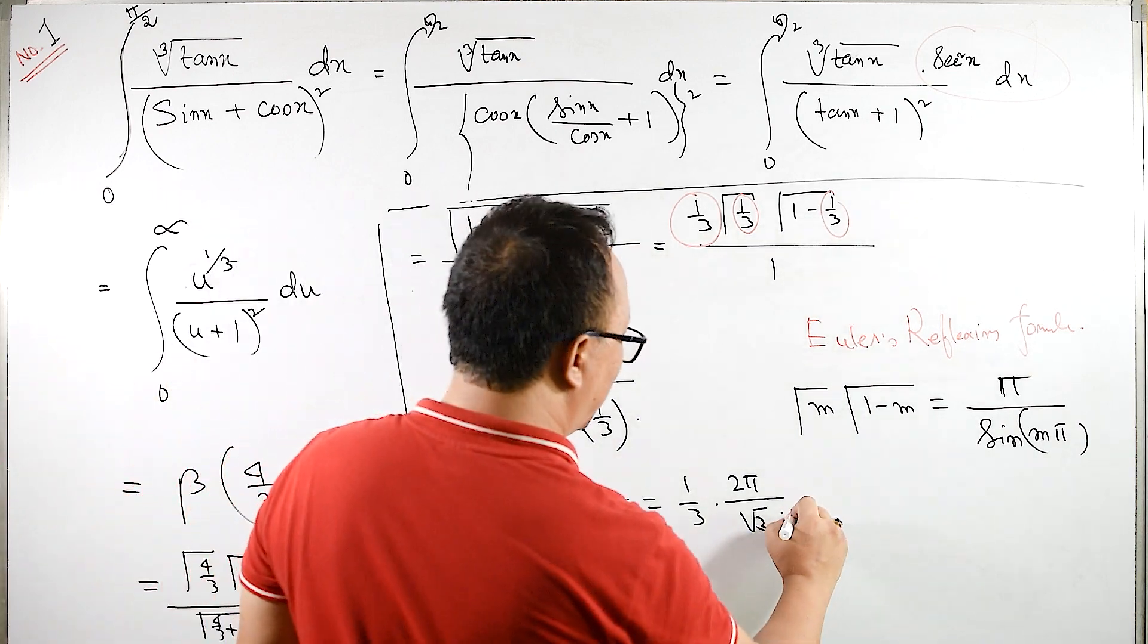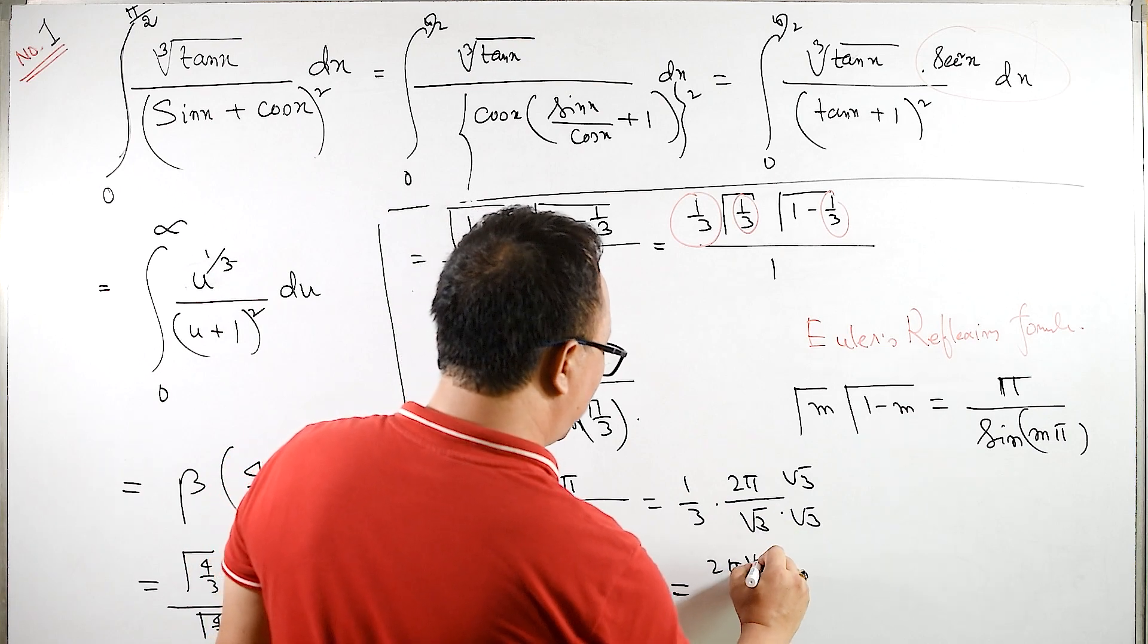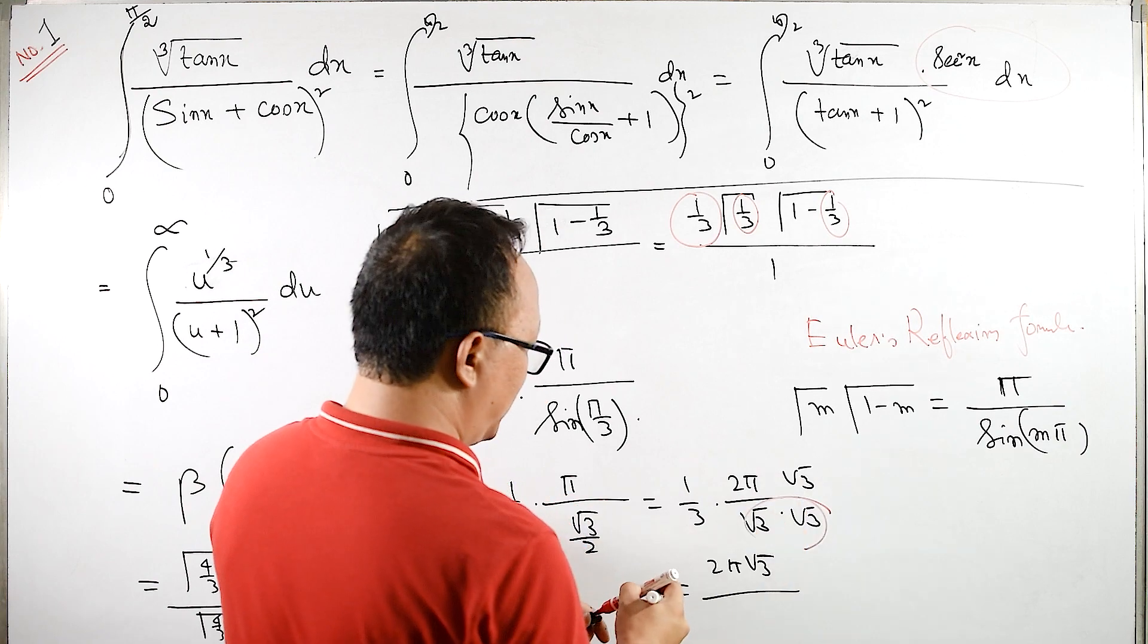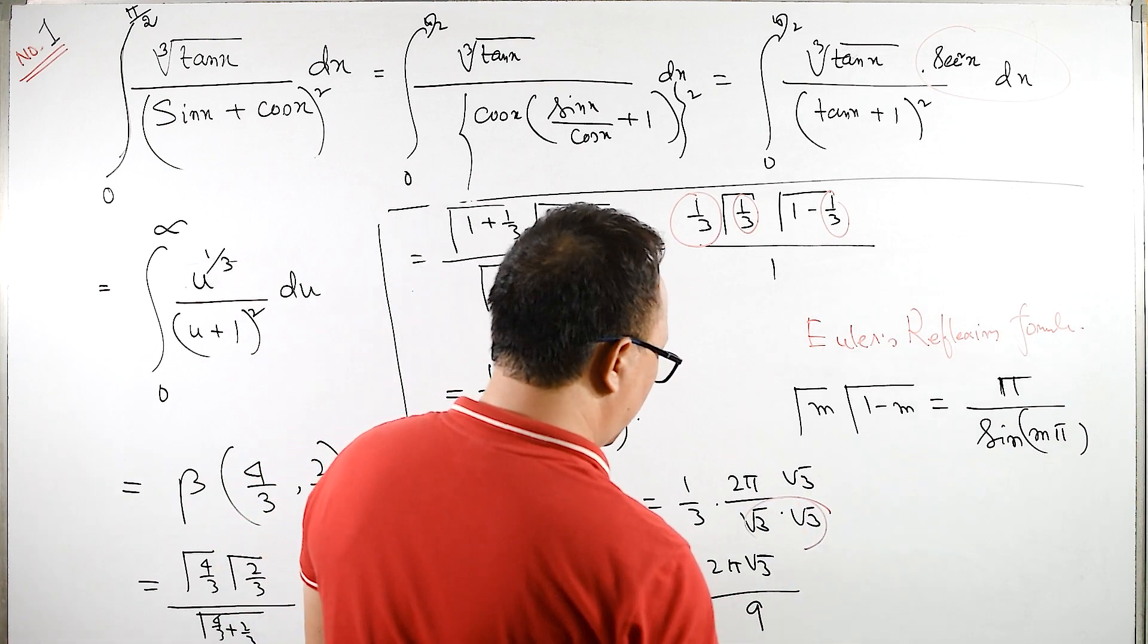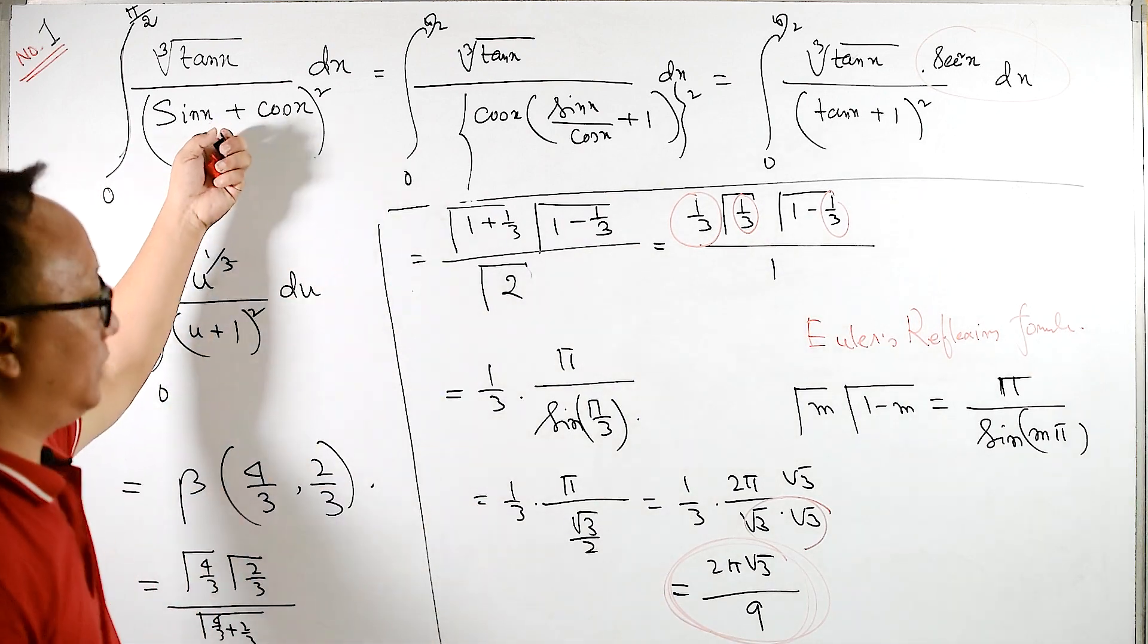Again, you can rationalize root 3. Root 3 is equals to 2 pi root 3 upon, this will get 3, 3 into 3 is 9. So this is the required answer for this.